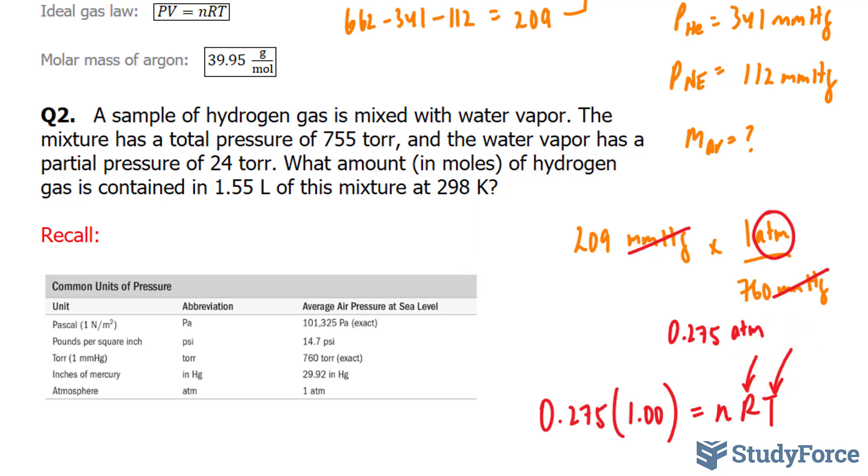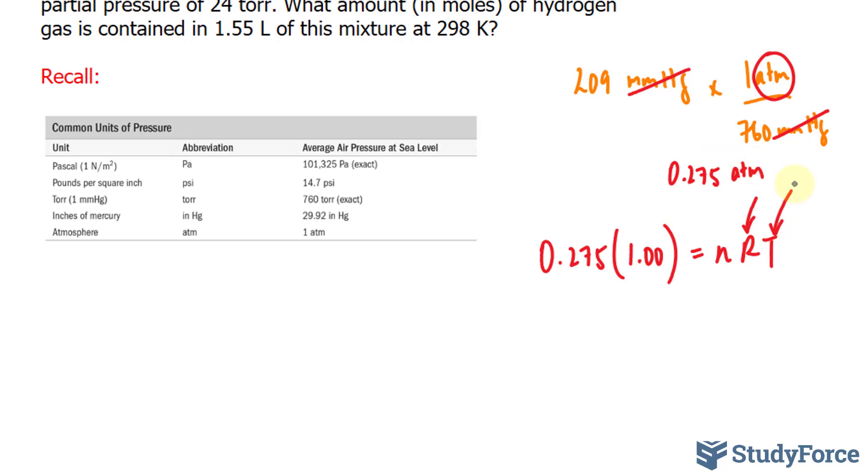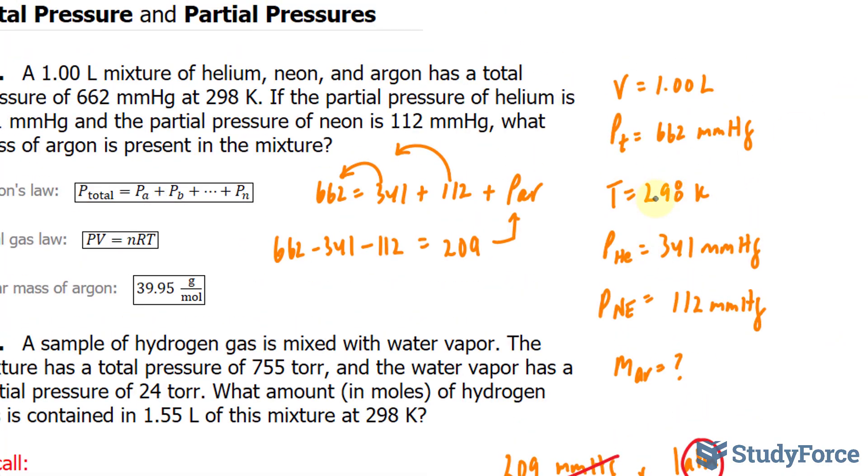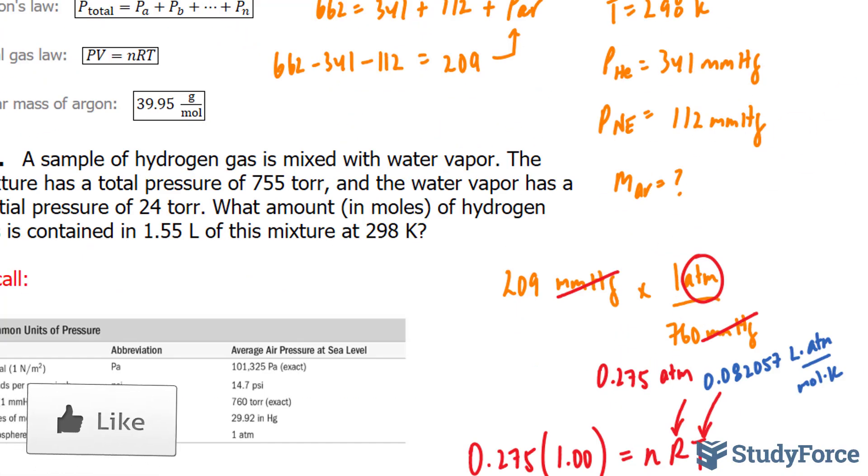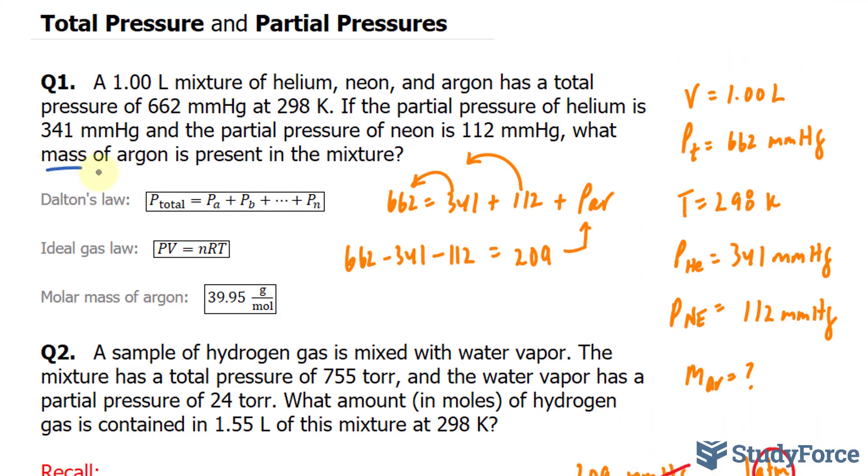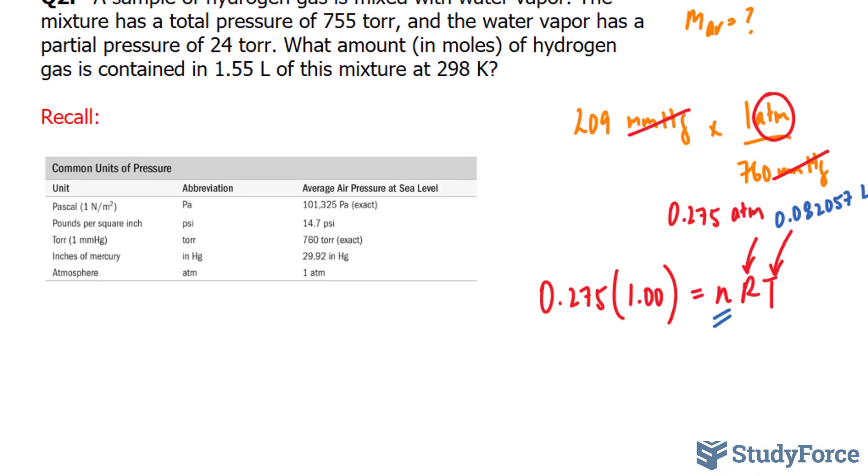That's the gas constant. We used this in previous videos. It's actually equal to 0.082057 liters times atmosphere over moles times Kelvin. So I'll replace that in for R, and what I got for T from the question was 298. If I'm looking for n, and remember, we are looking for the mass. So what I can do is I can find the number of moles, and then, using the molar mass of argon, I can find the mass. We'll do that in a moment.